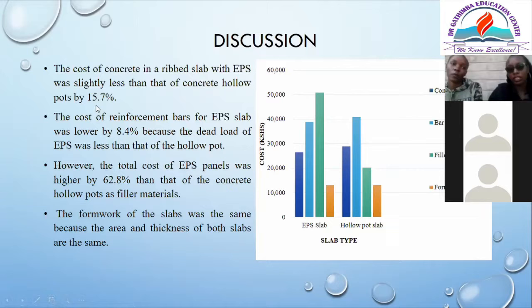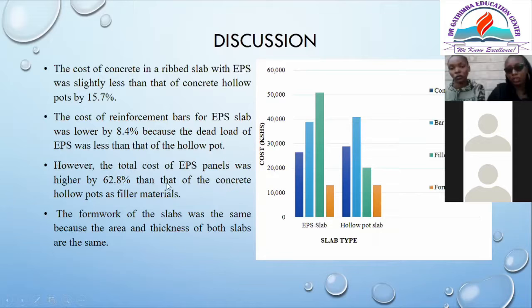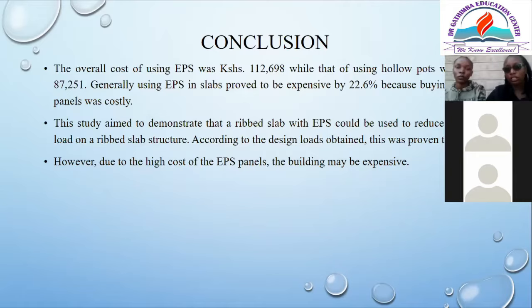The cost of concrete in the ribbed slab with EPS was slightly less than that of the concrete hollow pots by 15.7 percent. The cost of reinforcement bars for the EPS slab was lower by 8.4 percent because the dead load of the EPS was less than that of the hollow pot. However, the cost of the EPS panels as filler material was higher by 62.8 percent than that of the concrete hollow pots. In conclusion, the overall cost of using EPS was 112,000 shillings while that of using concrete hollow pots was 87,000 shillings — using EPS proved to be more expensive by 22.6 percent because of the buying price of the EPS panels in the market.